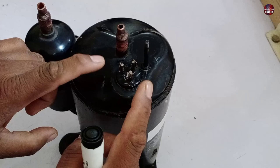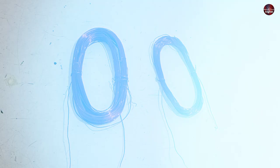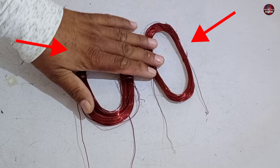First, you have to understand what is this common, running, and starting, and how are they fitted inside this rotary compressor. The rotary compressor has these types of coils installed inside them. These coils are installed as running, starting, and common inside the rotary compressor.